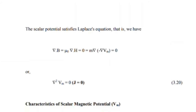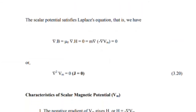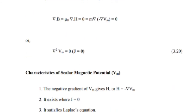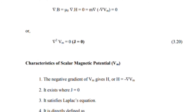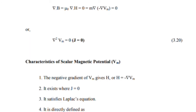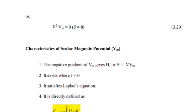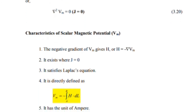The scalar magnetic potential satisfies Laplace's equation. We have del dot B equals mu-zero times del dot H equals zero. In place of del cross H equals J, we can substitute del squared Vm equals zero, where J equals zero. The characteristics of scalar magnetic potential Vm are: the negative gradient of Vm gives H, it exists where J equals zero, and it satisfies Laplace's equation.